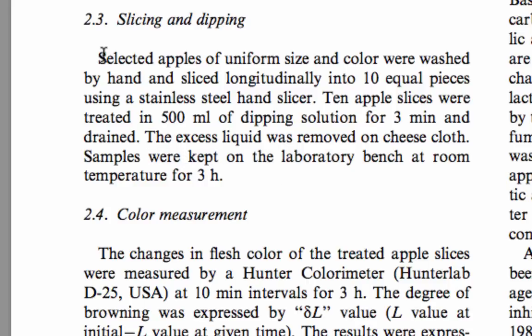'Samples were kept on the laboratory bench.' The reason this is a good thing to do is because it keeps the subject as 'selected apples,' 'ten apple slices,' 'the excess liquid,' 'samples' — the subject is always the samples or the apples. If you didn't use passive, then you'd have to say 'we washed selected apples of uniform size by hand,' 'we sliced them longitudinally,' 'we treated them,' and the subject would be 'we, we, we, we, we,' which takes the focus off your research and more onto you.